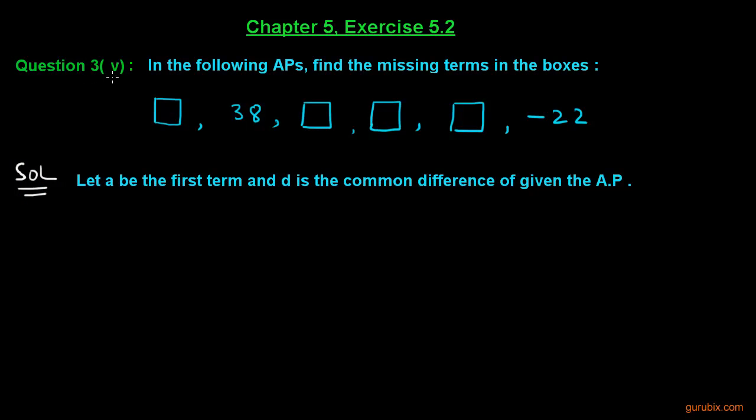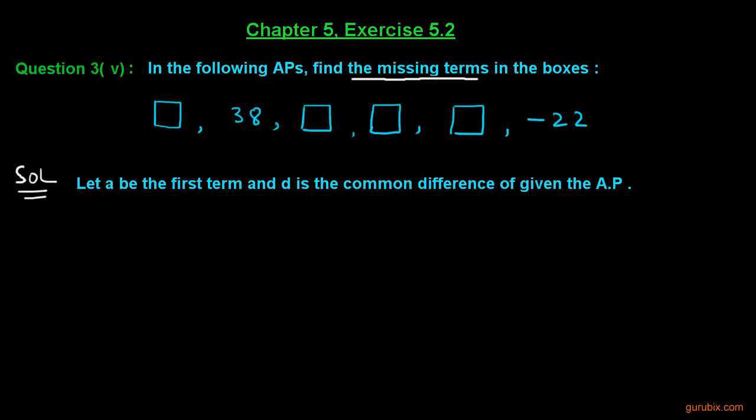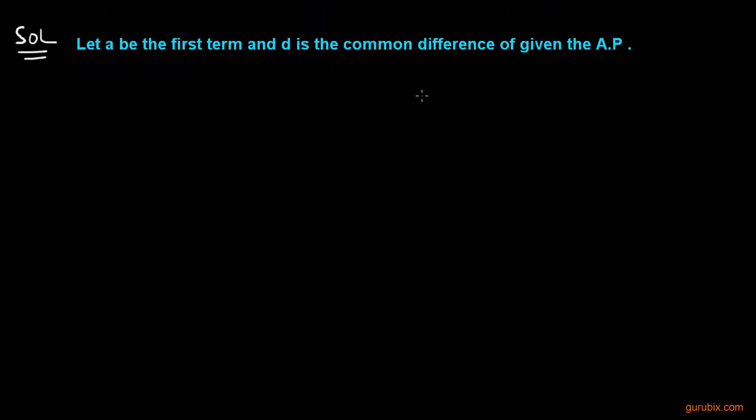Let us learn the fifth part of Question 3 of Exercise 5.2 of Chapter 5. In this question, we are asked to find the missing terms in the boxes. This means we have to find out the missing terms and write them in the place of these blank boxes. To solve this question, let a be the first term and d is the common difference of the given AP.